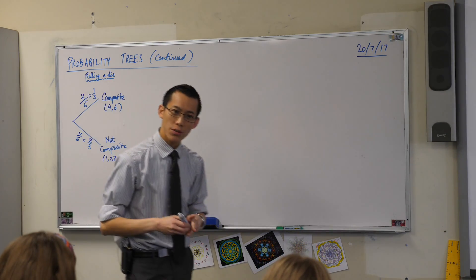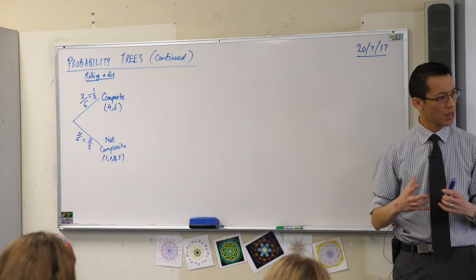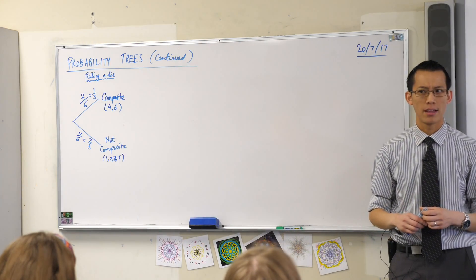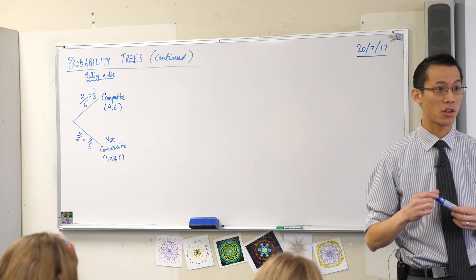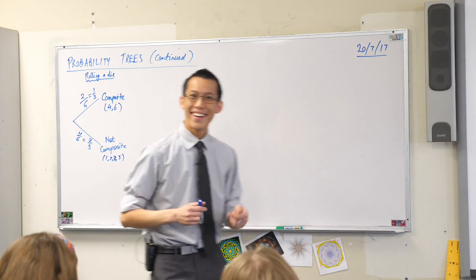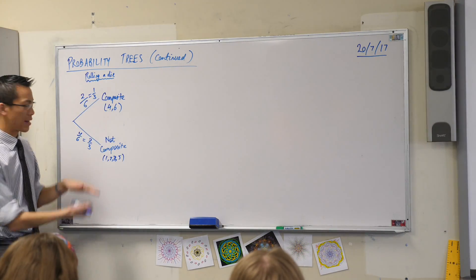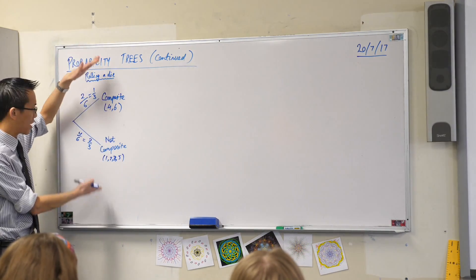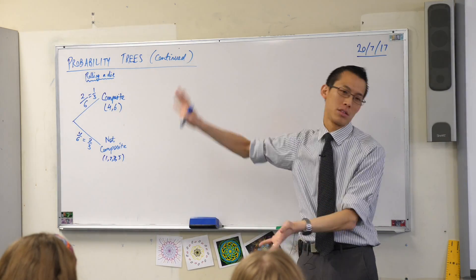Or you even could have gotten to that number, two thirds, without even counting. What's another way that we could have done it? Think back to yesterday and I introduced this idea or reintroduced this idea of a complement. I can subtract this from one. Because I know all of these items, they're going to have to all add up to one because that's every possible event.